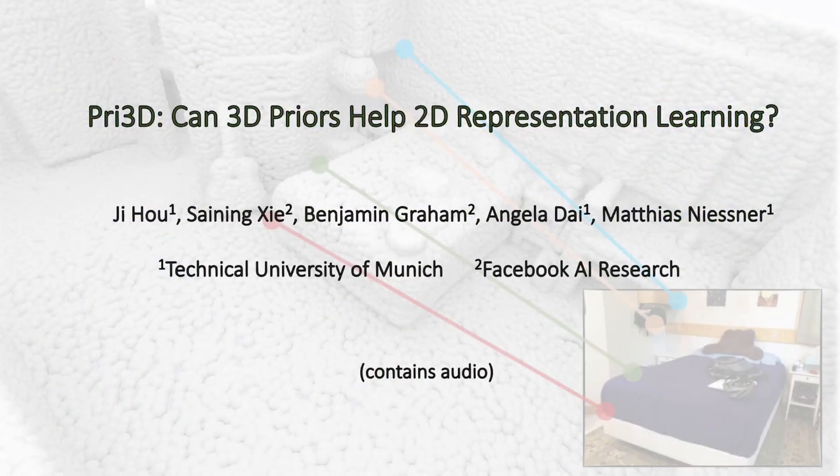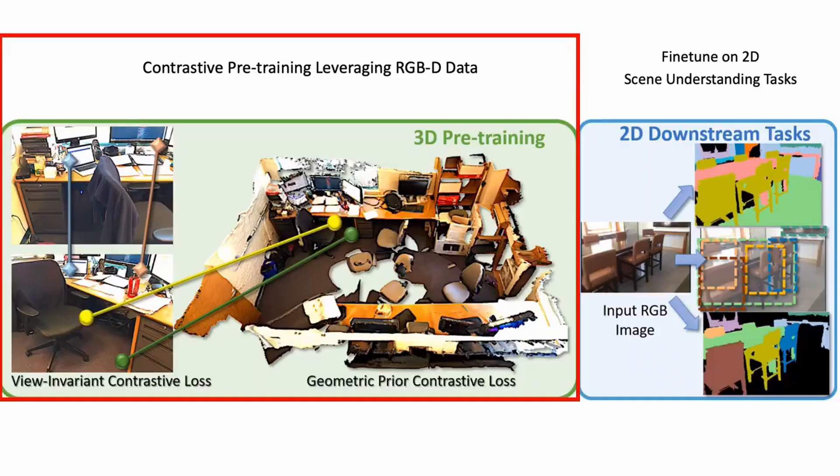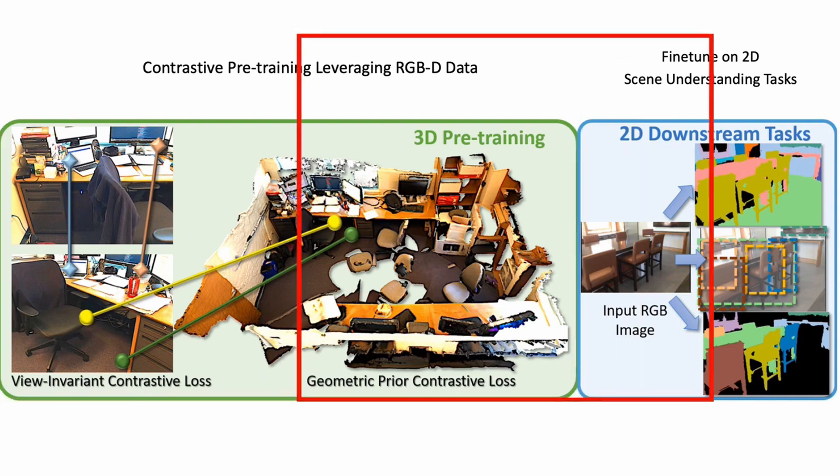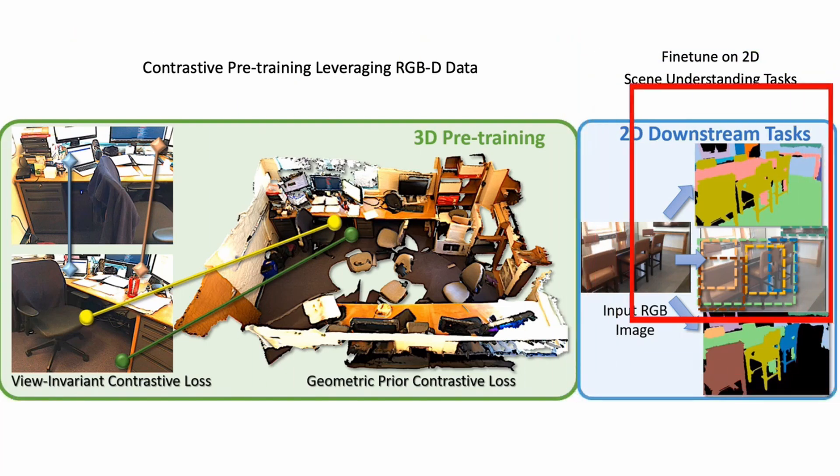We investigate the question, can 3D priors help 2D representation learning? We introduce a novel 2D-3D joint pre-training algorithm, which imbues geometric priors from RGB-D data into learned 2D representations for downstream 2D tasks such as semantic segmentation, object detection, and instance segmentation.